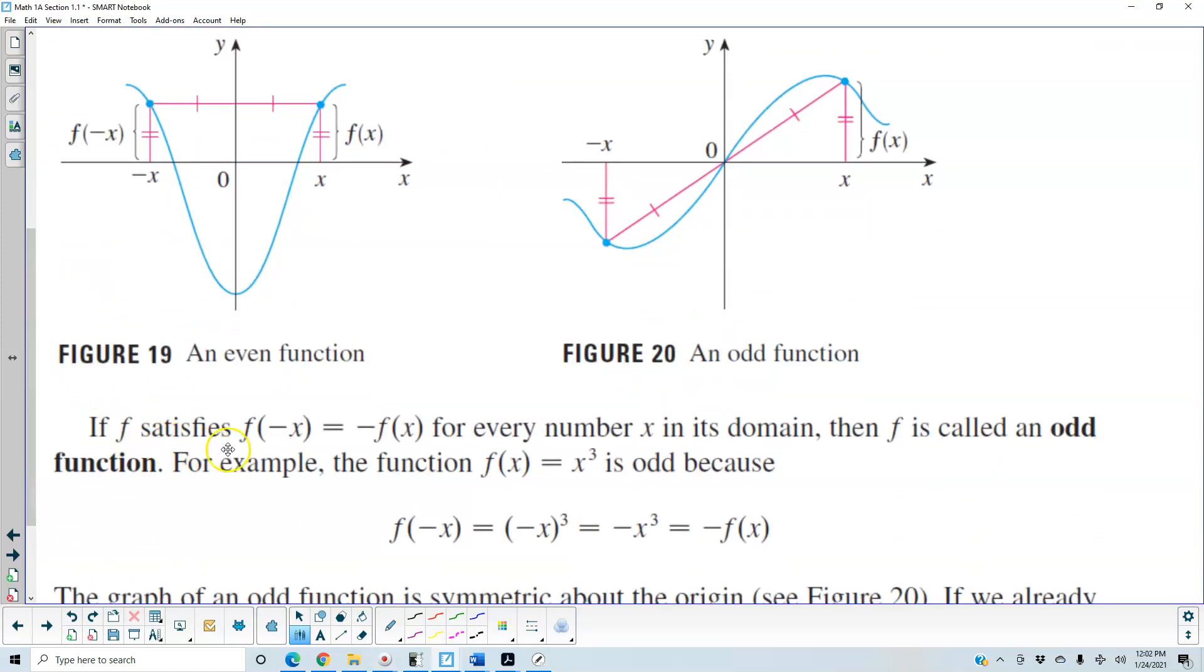Now, if f satisfies f(-x) = -f(x) for every number x in its domain, then f is called an odd function.